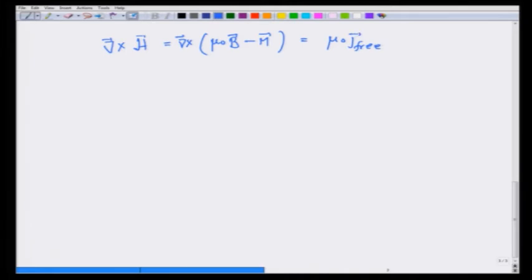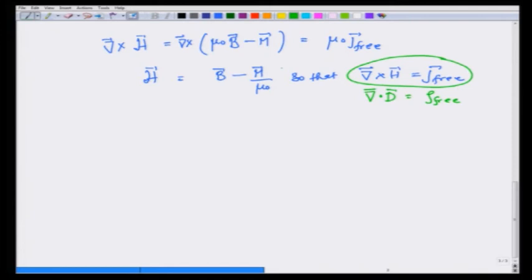What we have introduced is a field H which is B minus M over μ₀, whose curl is equal to j_free. It will be even better if I divide by μ₀ and define H as (B minus μ₀ M) over μ₀, or B over μ₀ minus M.